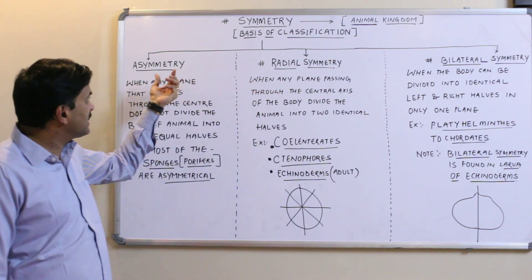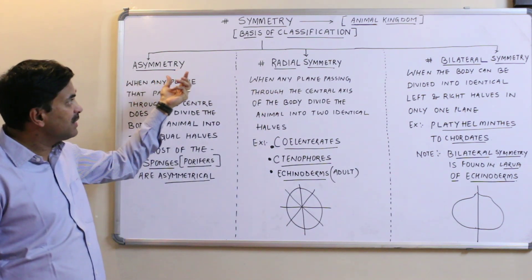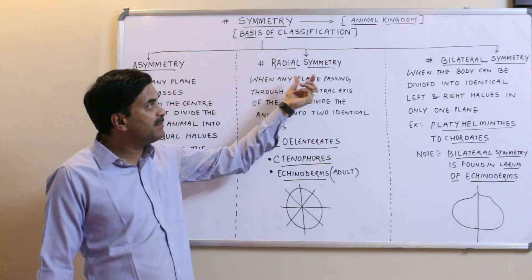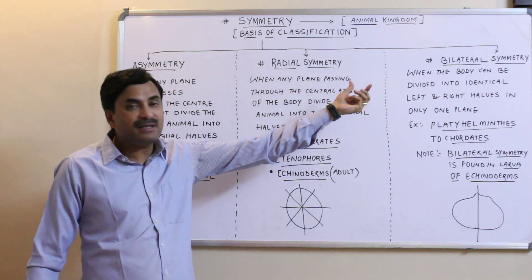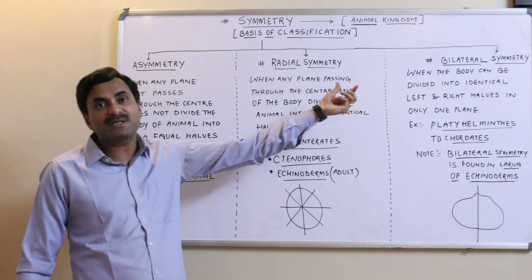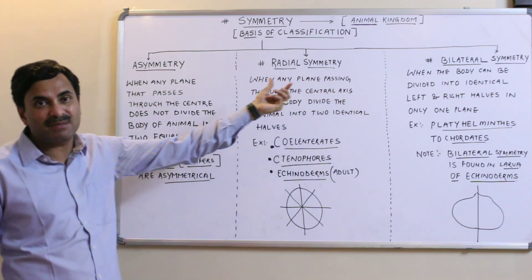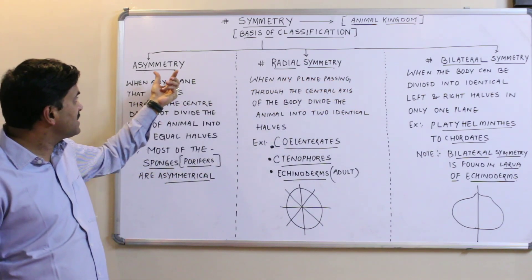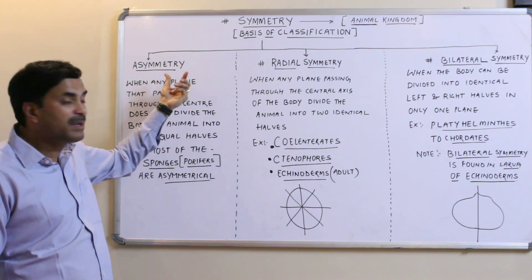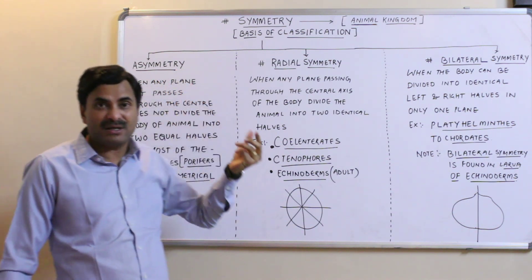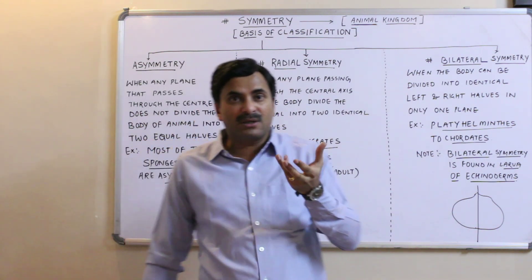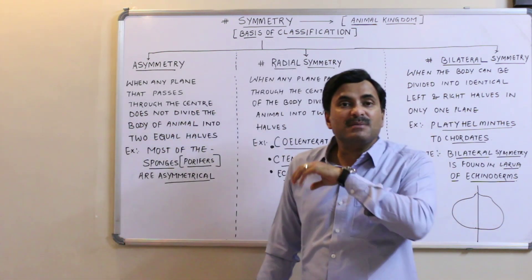The first is known as asymmetry, the second is known as radial symmetry, and the third is known as bilateral symmetry. Now the question arises: what do you mean by asymmetry?